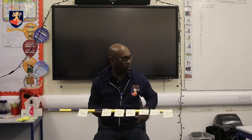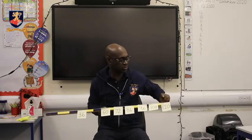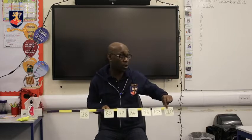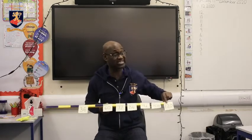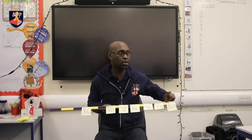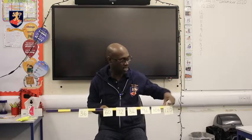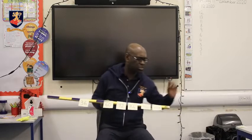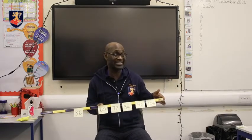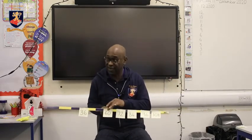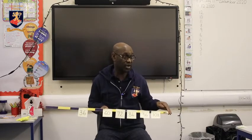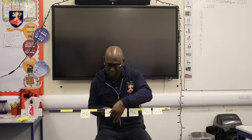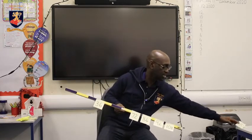Now we are going to use our knowledge of multiplying by 10. So 12 lots of 10, or 10 lots of 12, would be 120. So I'm going to remove 120, but we also know that half of 10 is 5 and half of 120 would be 60. So I'm also going to remove that.